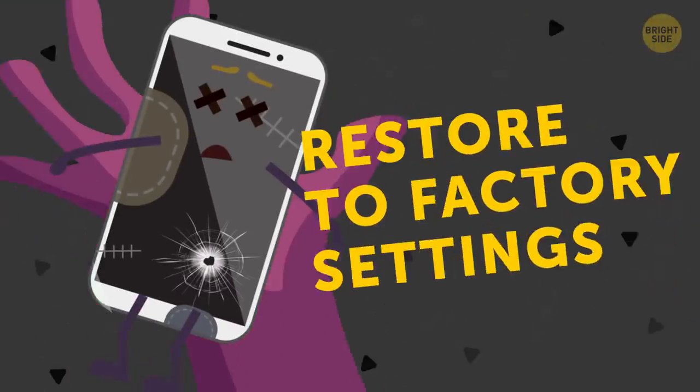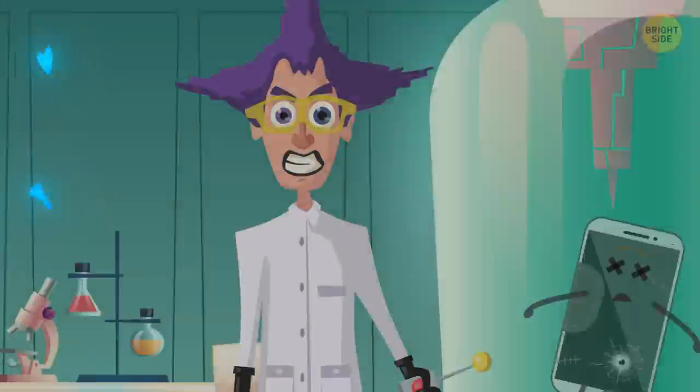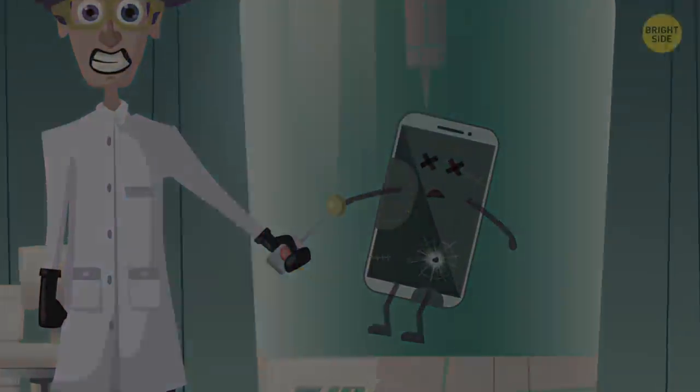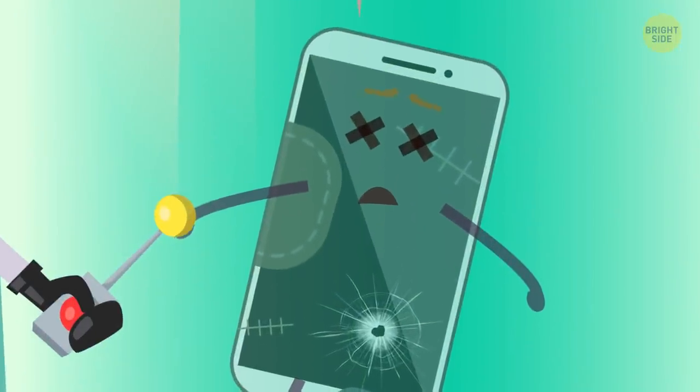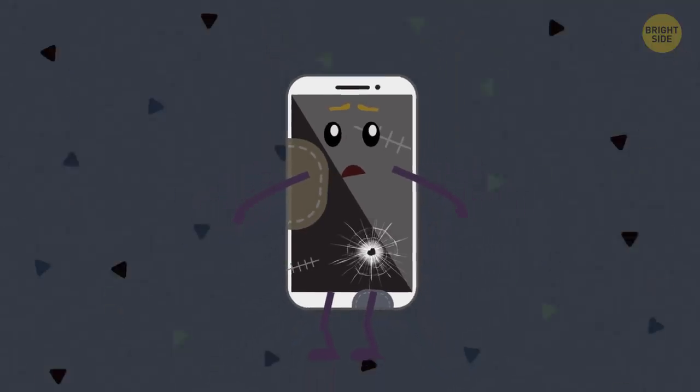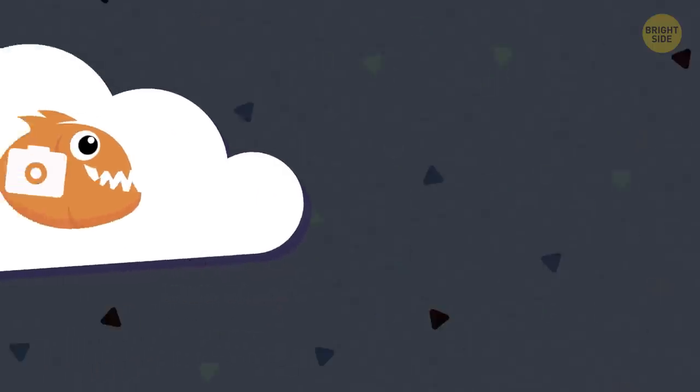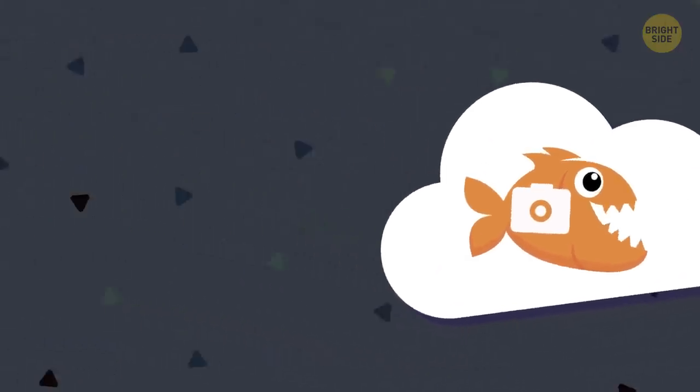Restore to Factory Settings. This is the most radical of all steps, but if all else fails, you've always got this option. Resetting your phone deletes all the apps and data you have on it, so make sure you back it up on cloud storage or a computer before you wipe it clean.